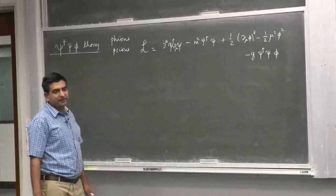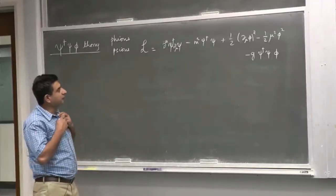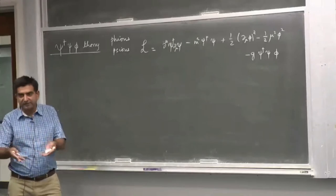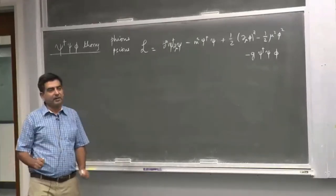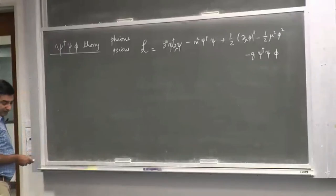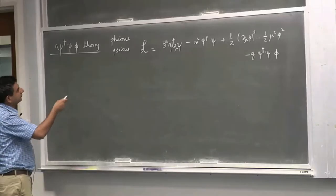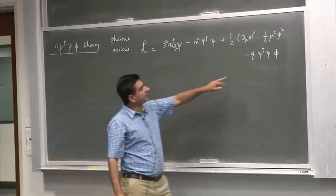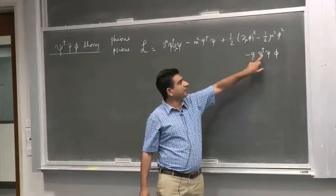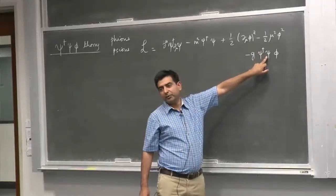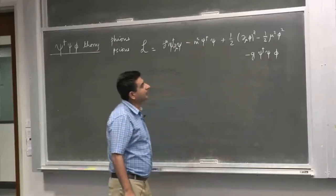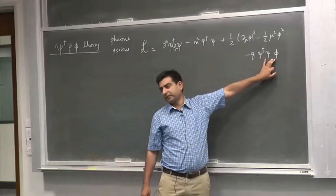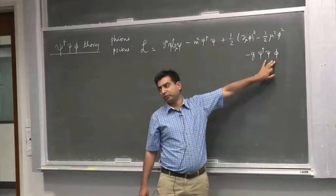We can look at processes of different kinds and come up with Feynman rules for drawing these diagrams. The rules can themselves be used as the starting point for determining the scattering matrix elements. QED is similar to this theory — in QED, you replace ψ† with ψ-bar, which is a spinor field, and the scalar φ with the photon field, giving you the interaction of the Dirac field with photons.